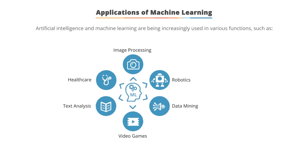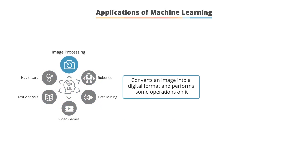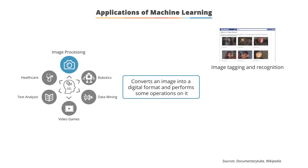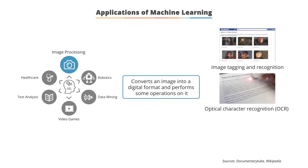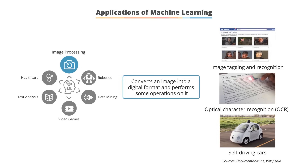Image processing is a technique to convert an image into a digital format and perform operations on it to produce an enhanced image or extract useful information. Examples include Facebook's automatic face tagging, optical character recognition which scans printed documents to digitize text, and self-driving cars. Tesla's Autopilot system allows cars to self-steer, adjust speed, detect nearby obstacles, apply the brakes, and park.